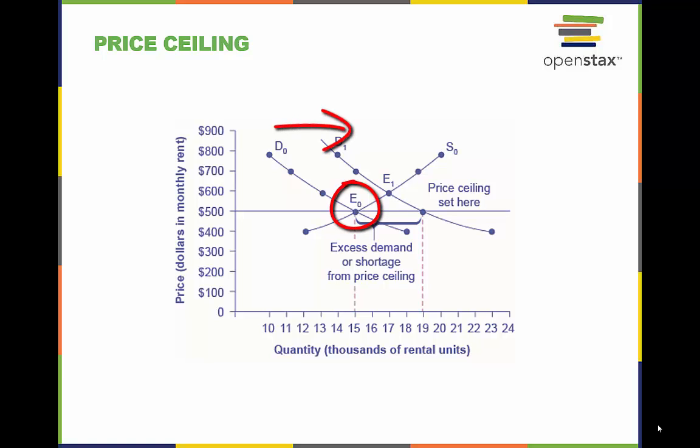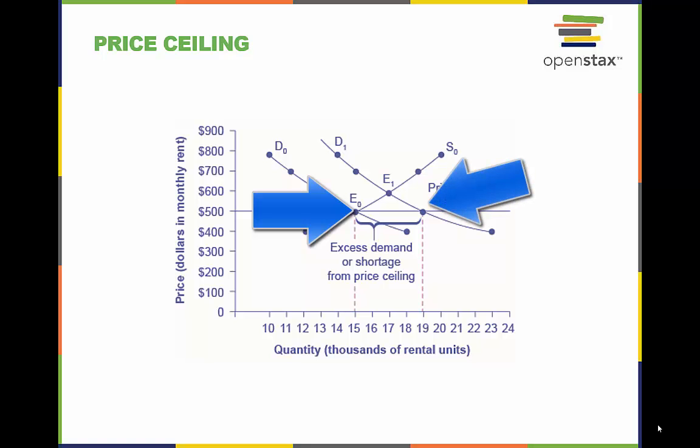If demand shifts from DO to D1, the new equilibrium would be at E1 unless a price ceiling prevents the price from rising. If the price is not permitted to rise, the quantity supplied remains at 15,000. However, after the change in demand, the quantity demanded rises to 19,000, resulting in a shortage.